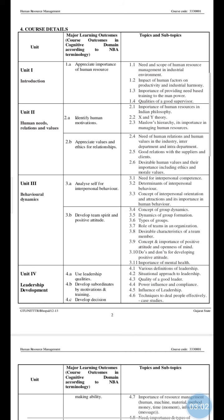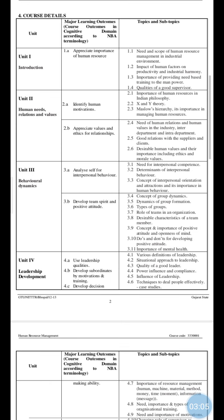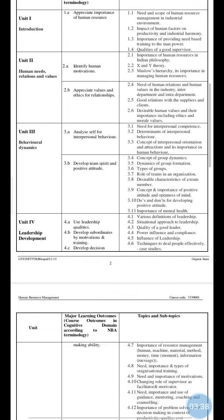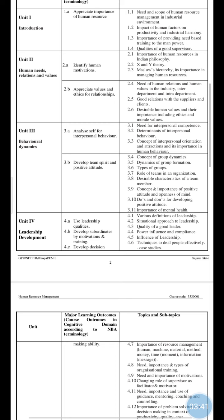The fourth topic of Unit 1 is quality of a good supervisor. The second unit is Human Needs, Relations and Values. For this unit there are total six topics. First, importance of human resource in Indian philosophy; second, X and Y theory; third, Maslow's hierarchy of needs theory.